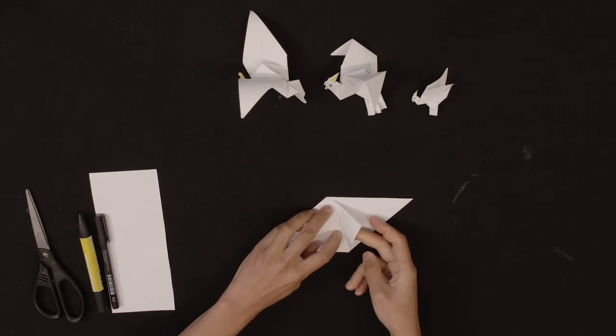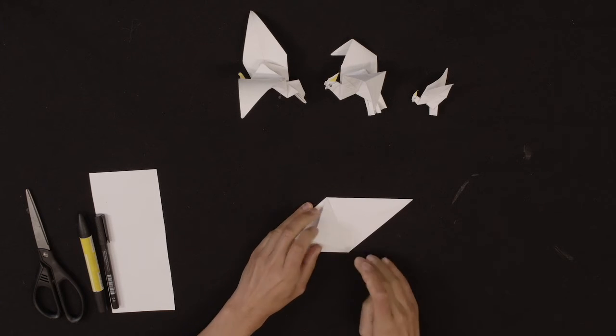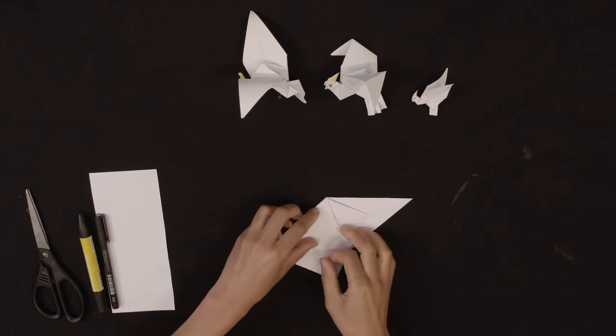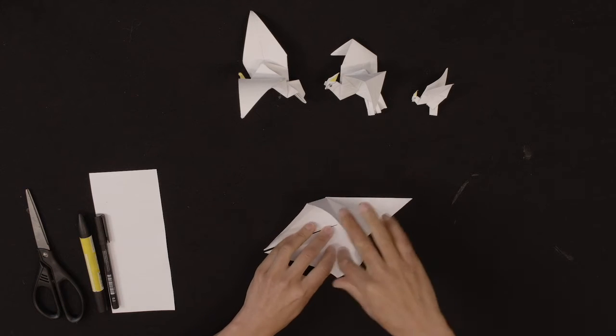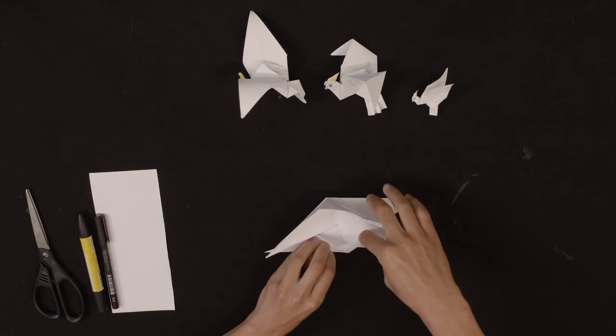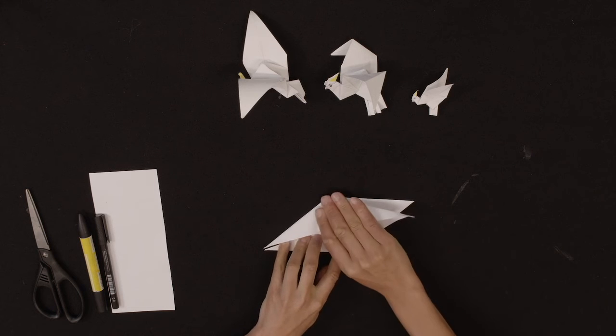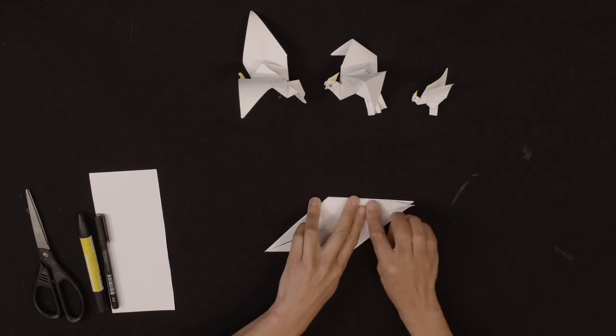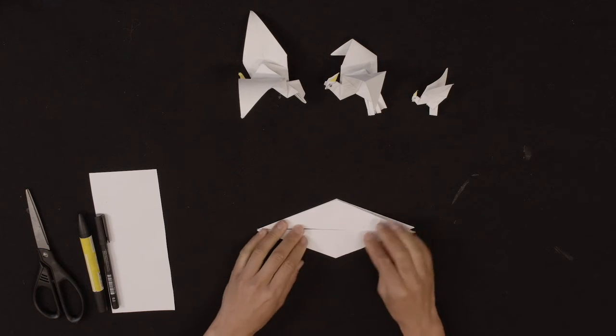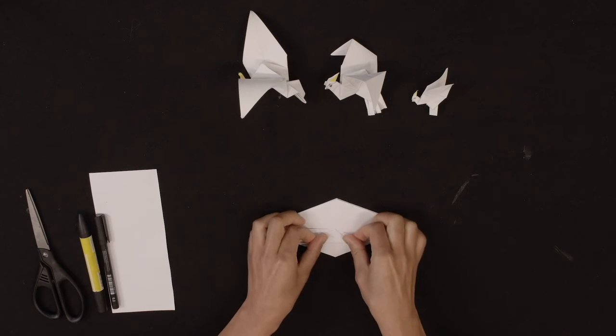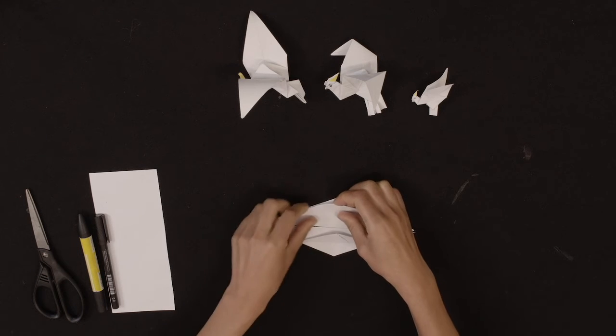So you're going to turn it around, you're going to fold the triangle down, open up, and we're going to fold again to the center over the crease that you've already got.